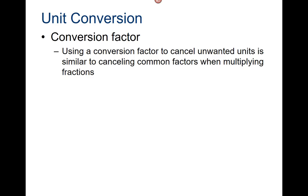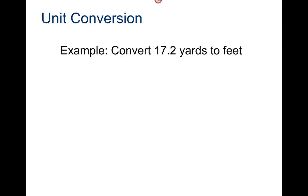Unit conversion — conversion factor. Using a conversion factor to cancel unwanted units is similar to canceling common factors when multiplying fractions. For example, here we can cancel the sevens. That leaves us with five over three.